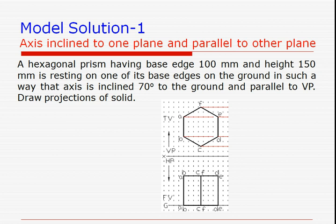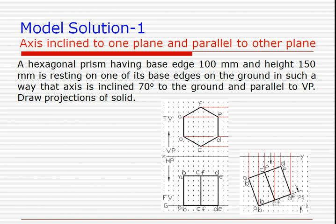In the top view you get the true shape of the base, and in the front view you have the hexagonal prism of the given dimensions. In the next step we give the inclination of the axis, reducing it from 90 degrees to 70 degrees. The inclination of the base is 20 degrees, which ensures that the inclination of the axis is 70 degrees.